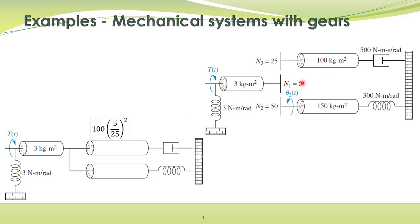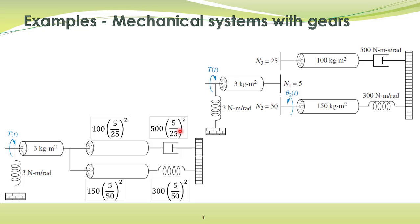In referring these impedances to the other side of the shaft, we multiply them by the square of the gear ratio. For example, this impedance of 100 must be multiplied by (5/25) squared — that is, number of teeth on the destination shaft divided by number of teeth on the source shaft, whole squared. Similarly, these impedances must be multiplied by the square of their respective gear ratios: for this gear it is 5 over 25, and for this gear it is 5 over 50, so this impedance of 150 is multiplied by the square of 5 over 50.